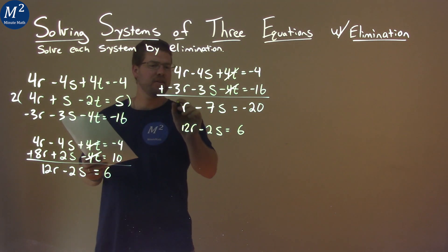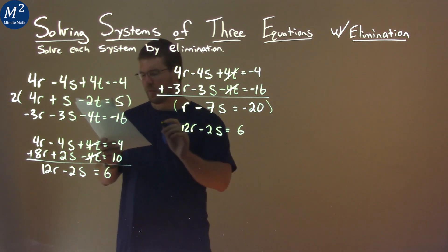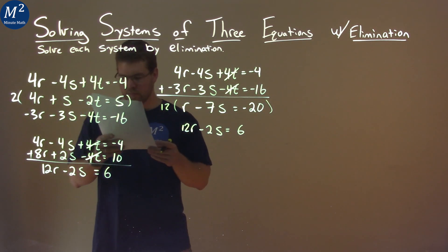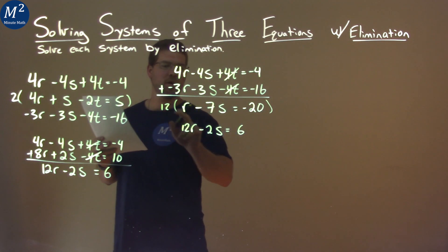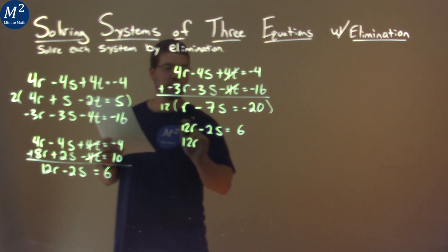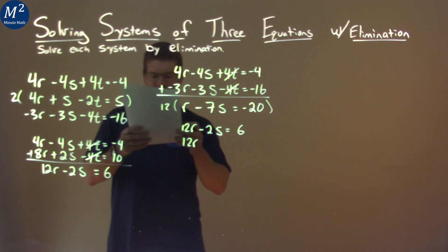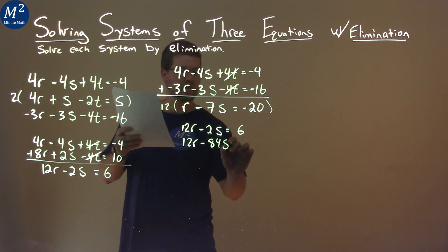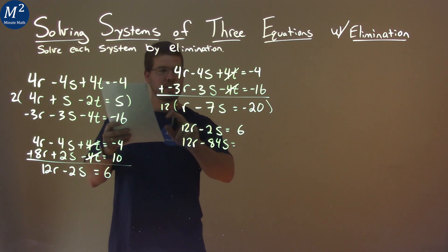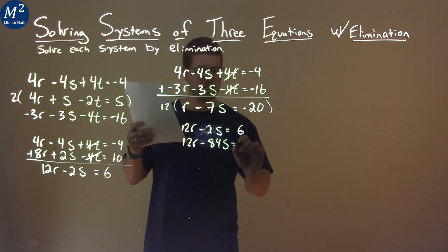12r minus 2s equals 6. If I take this equation as well and I multiply it by 12, I now have something that, well, let's see. 12 times r is 12r. 12 times negative 7 is negative 84s equals, and then 12 times negative 20 is negative 240.